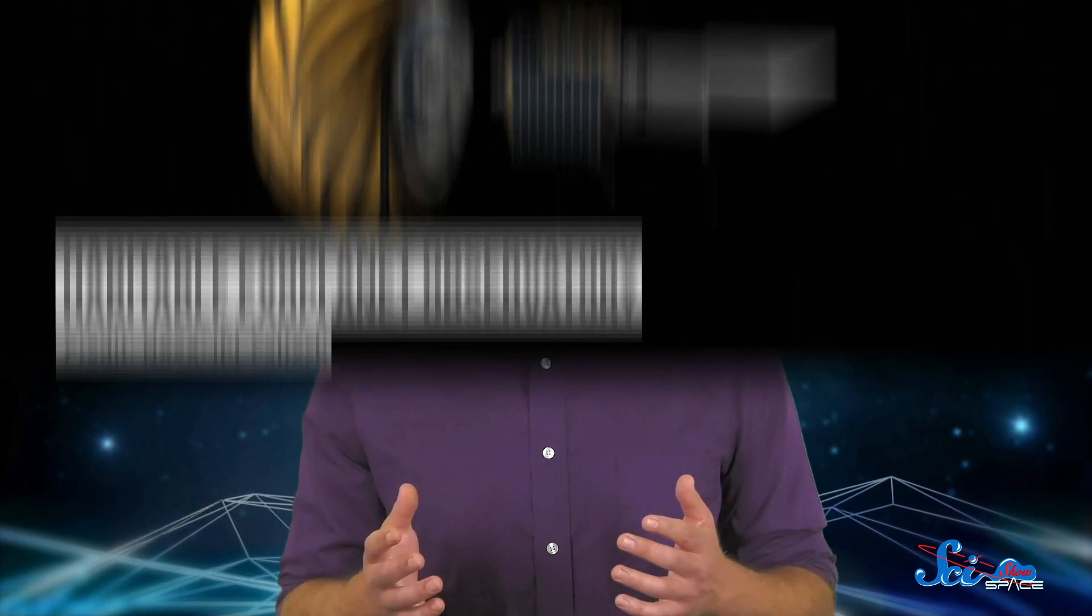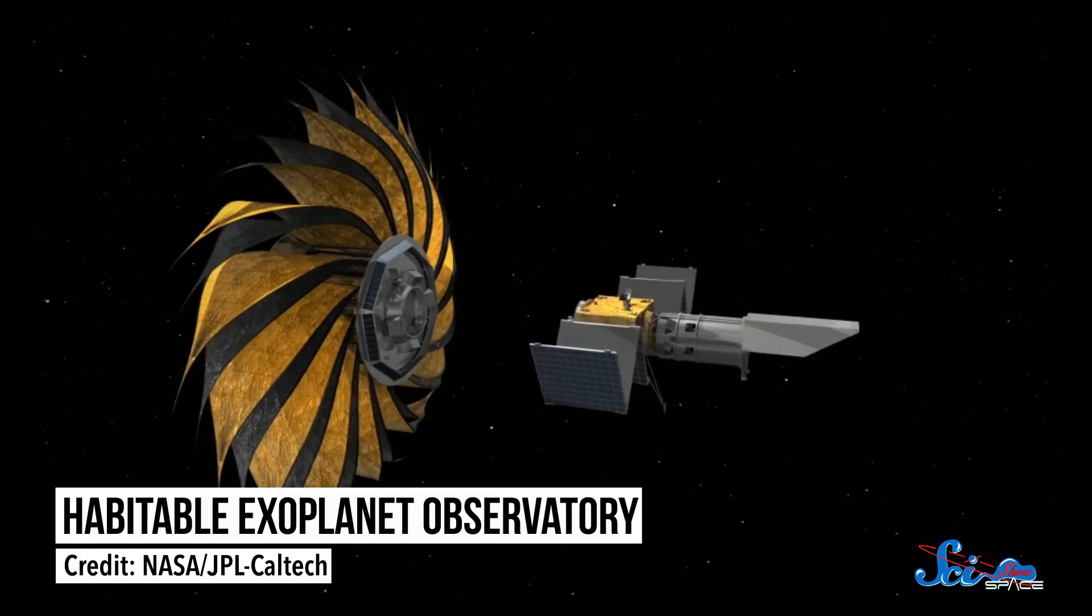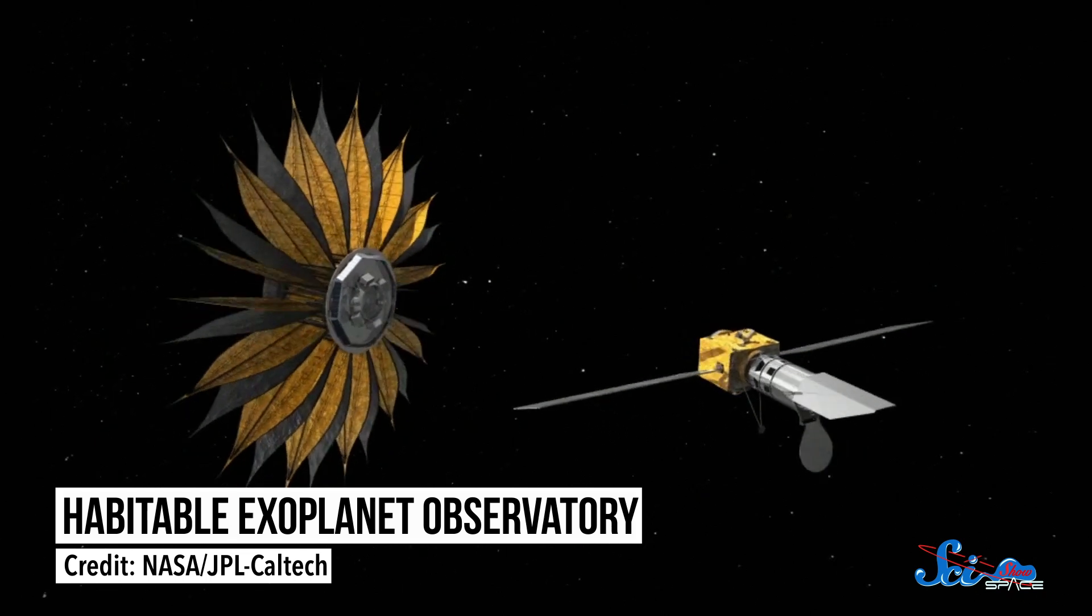Our telescopes still aren't very good at taking direct images of exoplanets. But there are plans for more powerful instruments that could do it, like a space telescope concept called the Habitable Exoplanet Observatory, or HABEX. In the meantime, by studying retinol-based life in different environments, we can learn more about how they evolved and whether they could have once dominated life on Earth. And someday, when we're finally looking through those next-gen telescopes...